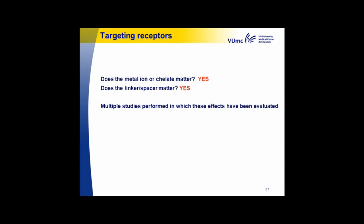Now I want to discuss the effect of changing the radio metal, the chelator, or the linker on biodistribution. This is more applicable to small molecules like peptides than for antibodies, because for antibodies the targeting molecule is so large that the chelator and metal are not so important. But especially for small molecules like peptides, the size, charge, and other properties of the chelator are important. There are multiple studies in the literature on this — I picked three examples.